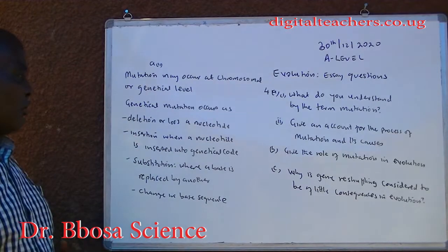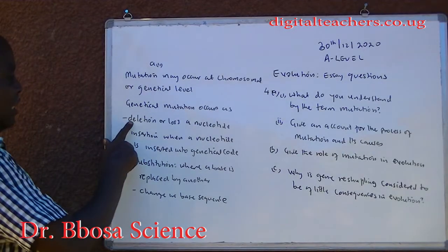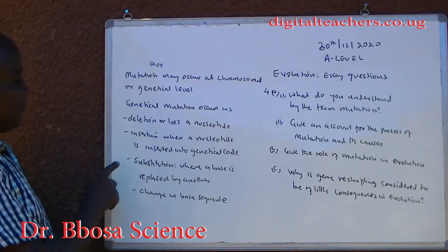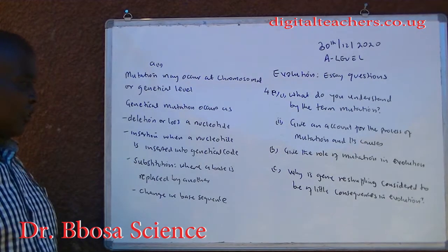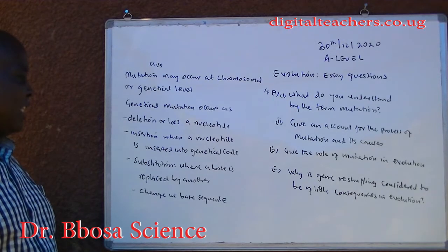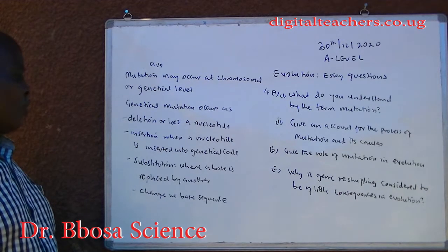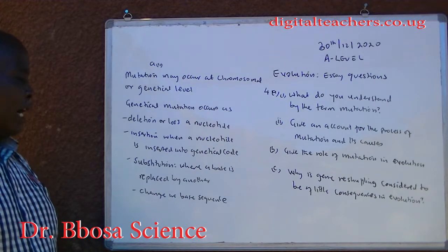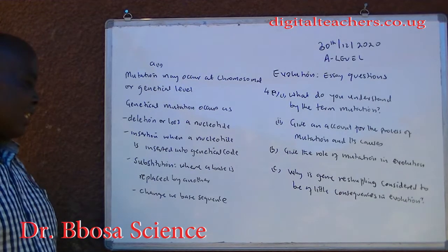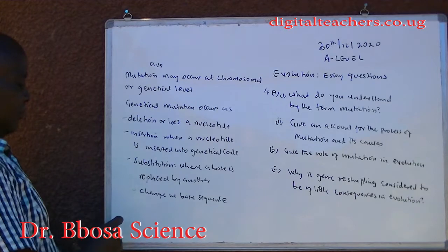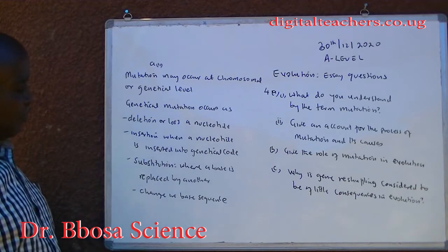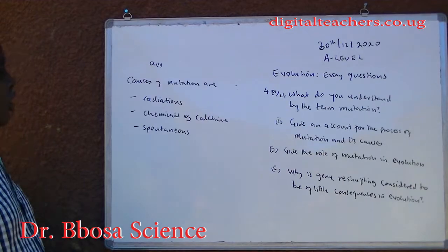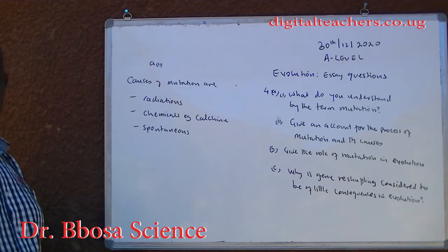Genetic mutation occurs as: deletion or loss of a nucleotide; insertion, when a nucleotide is inserted into a genetic code; substitution, where a base is replaced by another in the code; and change in the base sequence.